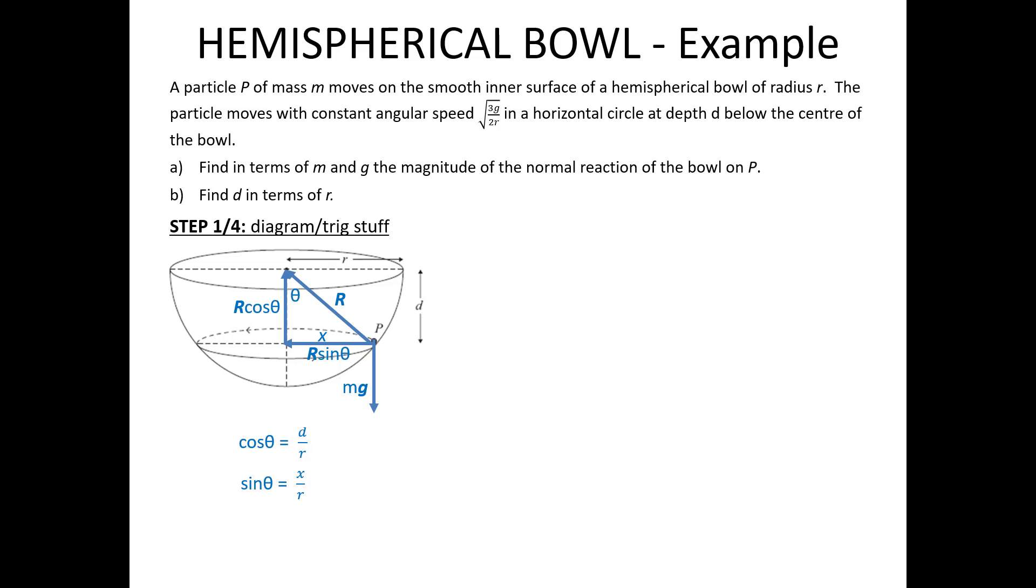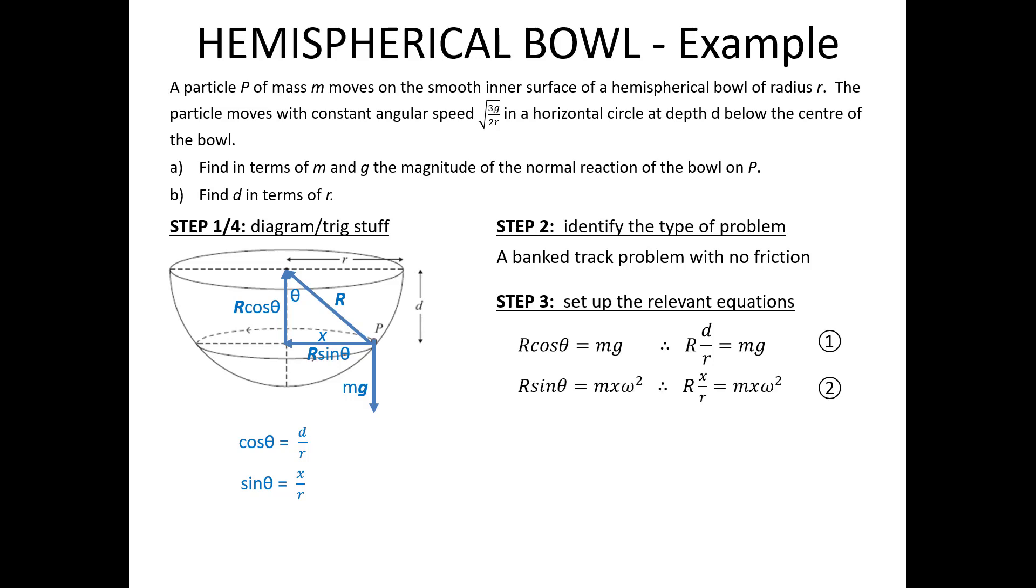Next, I decide what type of problem I've got. We've already ascertained that the type of problem you've got with a particle inside a hemispherical bowl is simply a banked track with no friction. The next thing I do is set up some equations, and I get these ones. That is resolving vertically, and that one is resolving horizontally. Notice I've substituted my values for cos θ and sin θ straight in, so I have them in the simplest form I can.